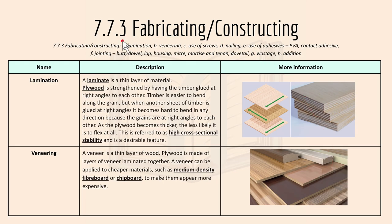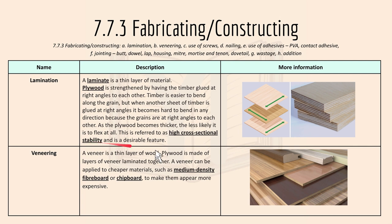Then we have 7.7.3 fabricating or constructing. We have lamination — it's a thin layer of material, like plywood. As the plywood becomes thicker, it's less likely to flex because different veneers are glued onto it. This is referred to as high cross-sectional stability and is a desirable feature. Veneering is basically a thin layer of wood like lamination. Plywood is made of layers of veneer laminated together, and veneer can be applied to cheaper materials like MDF or chipboard to make them appear more expensive.